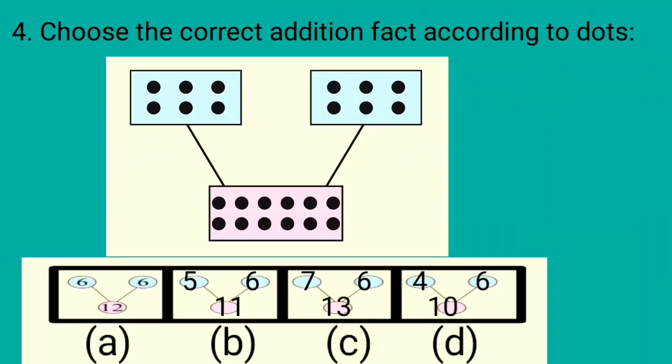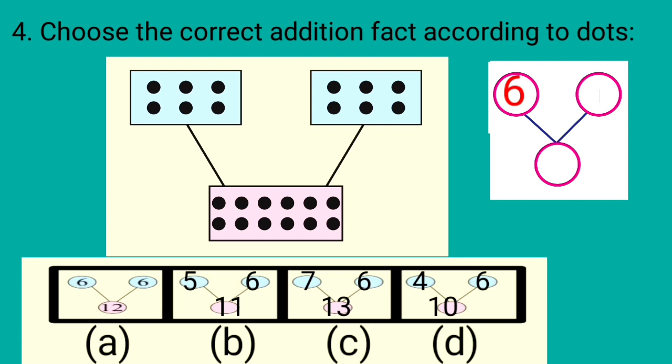Here is the fourth question. Choose the correct addition fact according to dots. Here we will count the dots at left side. 1, 2, 3, 4, 5, 6. At left side we have 6 dots. Now count the dots at right side. 1, 2, 3, 4, 5, 6. At right side also we have 6 dots.